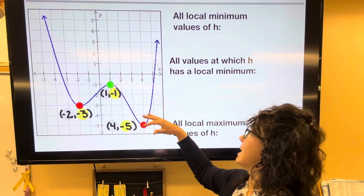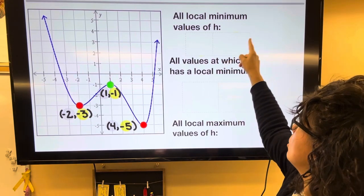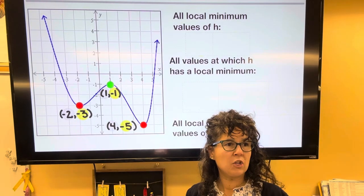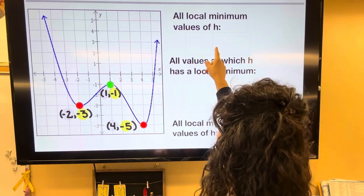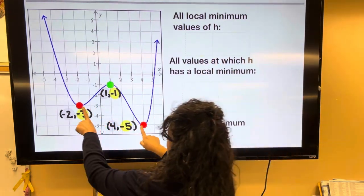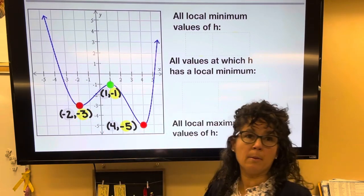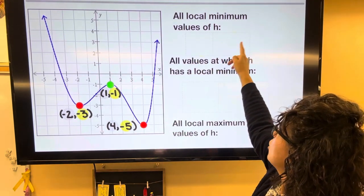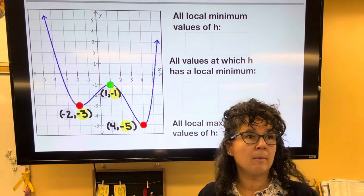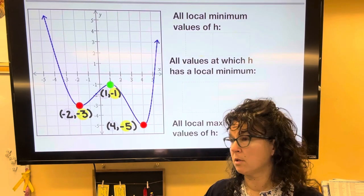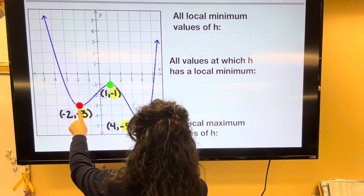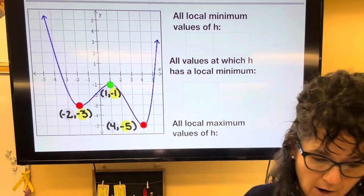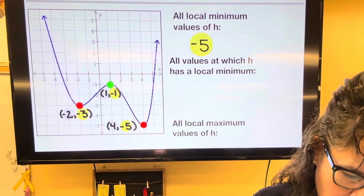But now actually answering the questions, it says all local minimum values of H. So a value of H, let's start actually with the minimas. So both of these are local minimums. But the way it's worded, the local minimum values, that's talking about the Y coordinate of the minimums. So we want to say that the answer is both negative 3 and negative 5. It's the heights of the minimums.